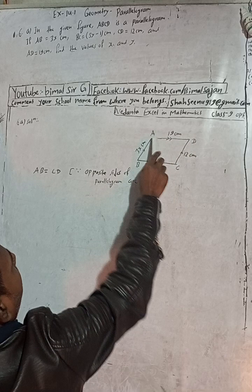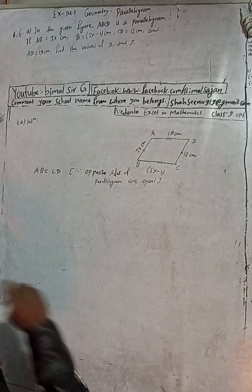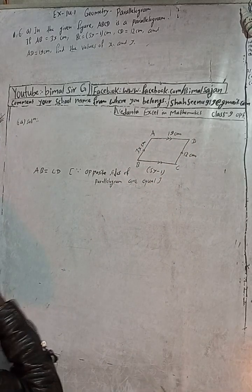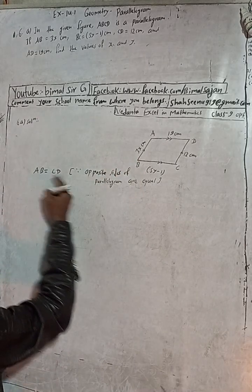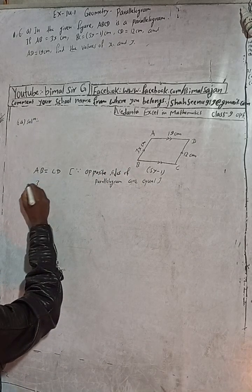In any parallelogram, this side is equal to this side and this side is equal to this side. So AB is equal to CD.